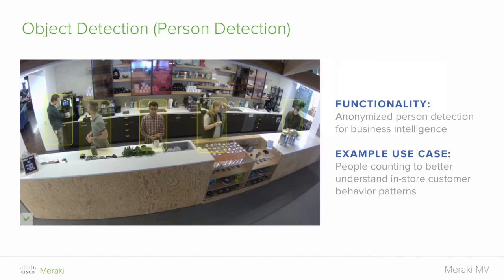Diving into what machine learning and advanced analytics actually means: these cameras are going to be able to do object detection on the camera itself, specifically person detection. The camera will be able to tell whether something in the frame is a person or not. This is not to be confused with facial recognition — there are privacy concerns associated with that. This is an anonymized person detection ability. If somebody leaves the frame and comes back, they'll be counted twice, but there are easy ways to account for that, such as placing the camera above an entrance-only door for more accurate counts.